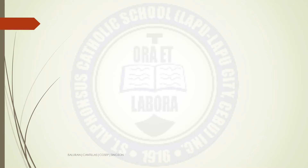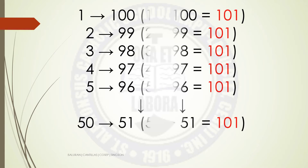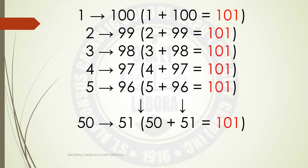How did Gauss find out the correct answer? Using this pattern, he discovered that when he divides 1 to 100 into 2 and combining the first number 1 and the last number which is 100, it gives a total of 101.